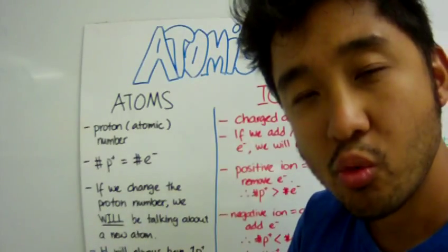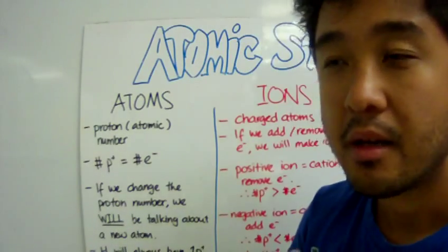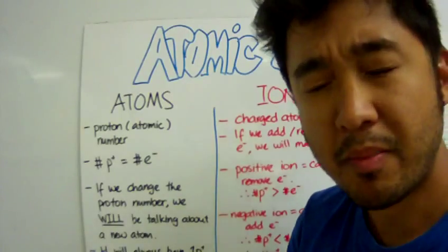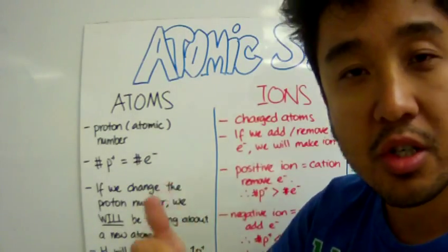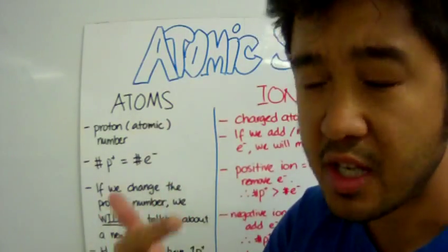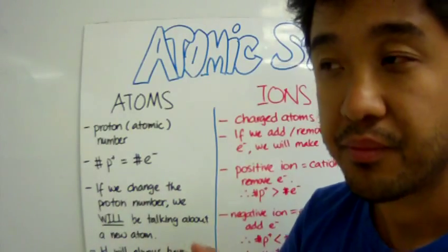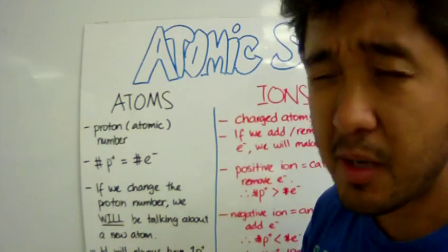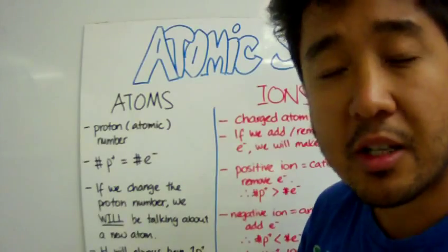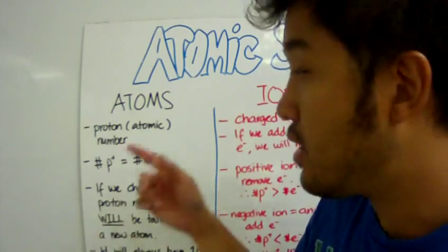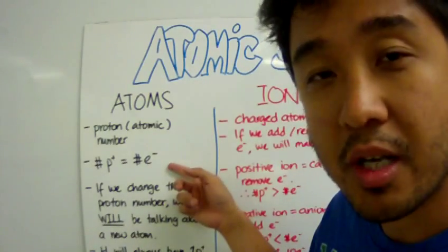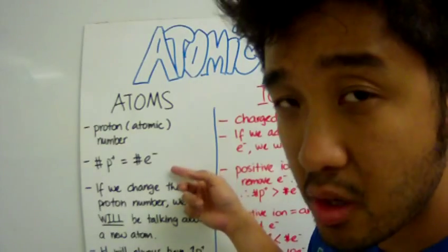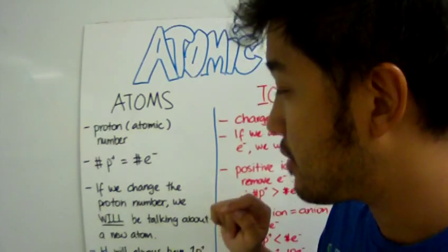We know that an atom has subatomic particles of protons, neutrons, and electrons. For an atom, an atom is said to be electrically neutral. That means the number of protons must always equal the number of electrons.